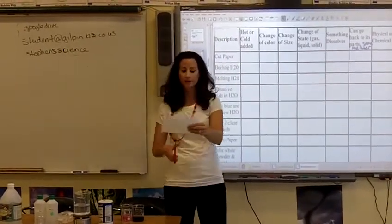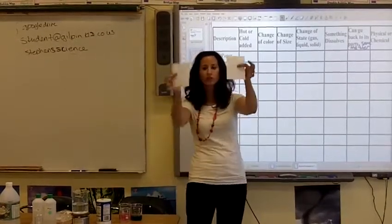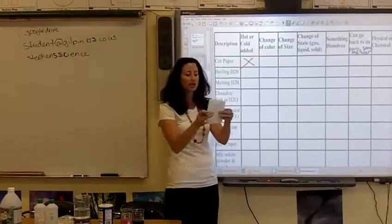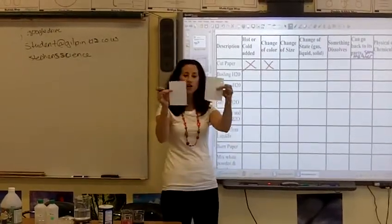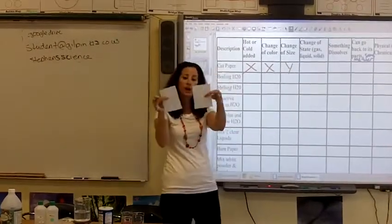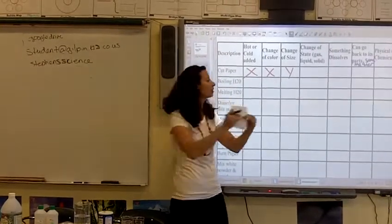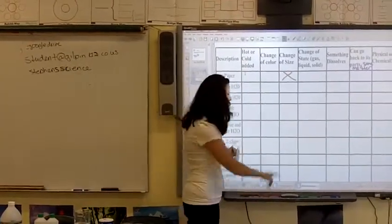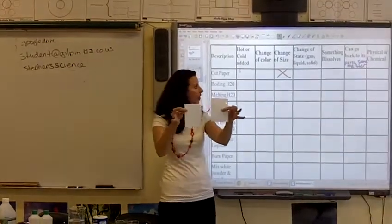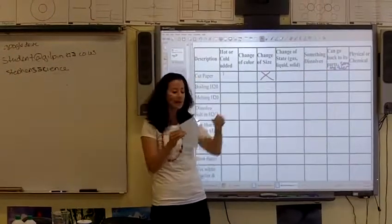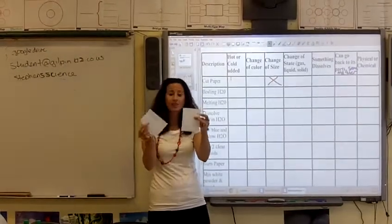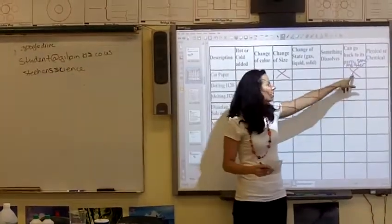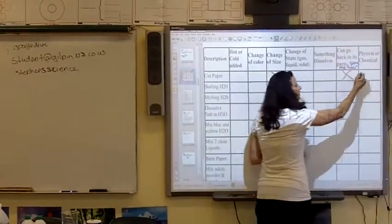I'm going to cut the paper. We've got two sheets of paper that I cut. Let's ask ourselves: did I add heat or cold to cut the paper? No. Was there a change in color? No. Was there a change in size? Yes, because the paper got split into two smaller halves. Was there a change in state? The paper is still a solid, so no. Did something dissolve? No. Can it go back, or is it the same type of matter? Even though I cut the paper, it's still paper — the same type of matter. So you would check that box.